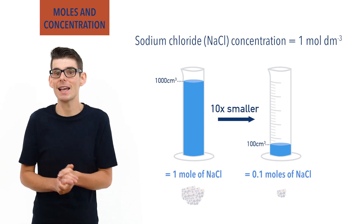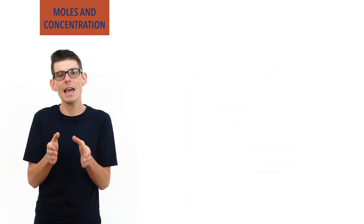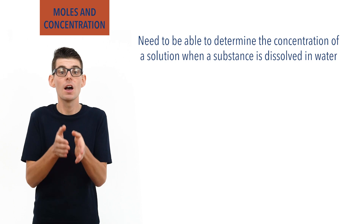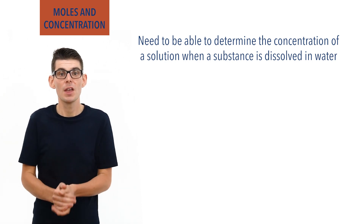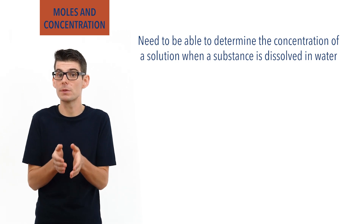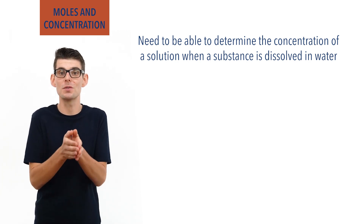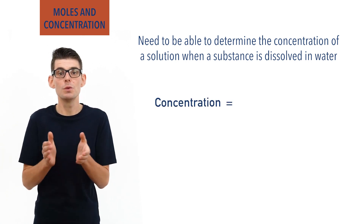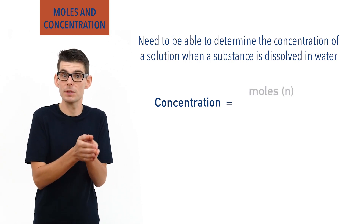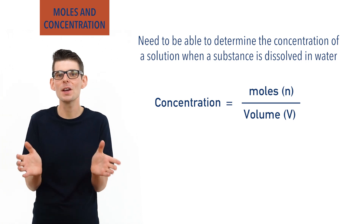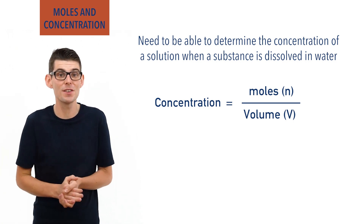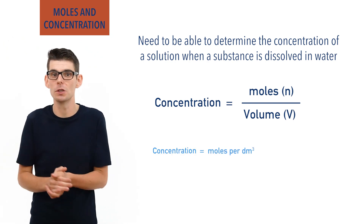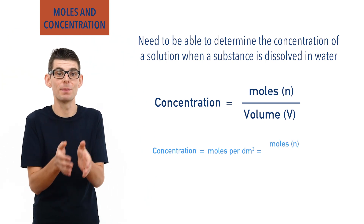A key skill and exam requirement at this level is to be able to calculate the concentration of a solution formed when a given number of moles of a substance are dissolved in a given volume of water, and also to calculate the moles of a substance present based on volume and concentration. To calculate the concentration of a solution, simply divide the moles of substance by the volume of solution. You don't need to remember an equation — just look at the units: moles per decimetre cubed means moles divided by volume.